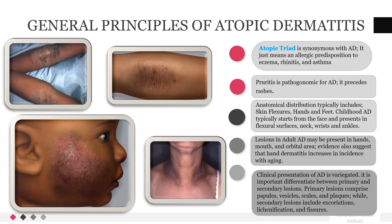General principles of AD continued. Atopic triad is synonymous with AD — it means an allergic predisposition to asthma, eczema, and rhinitis. Pruritus is pathognomonic for AD and precedes rashes. Anatomical distribution of AD typically includes skin flexors, hands, and feet.